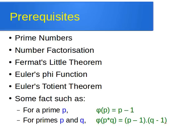Before I delve into the details of how the RSA algorithm works, I'd like you to be familiar with the following: prime numbers, number factorization, and number factorization to its prime factors, especially the fundamental theorem of arithmetic. I'd also like you to be familiar with Fermat's Little theorem, Euler's phi function, and Euler's totient theorem, especially using the phi function.